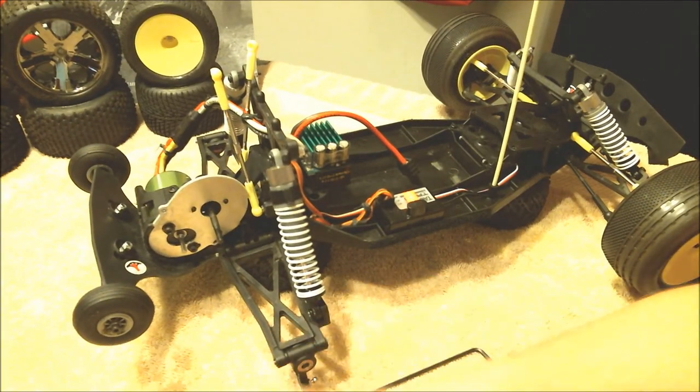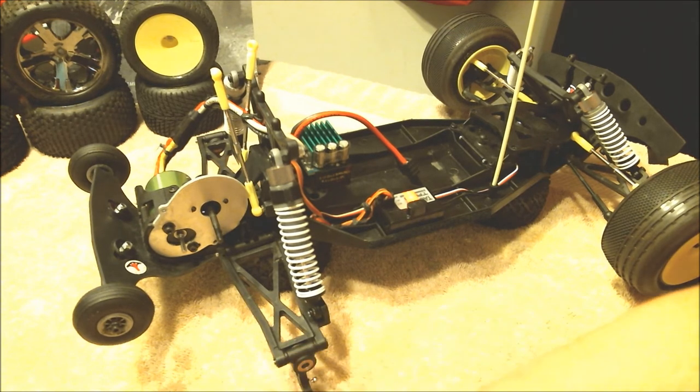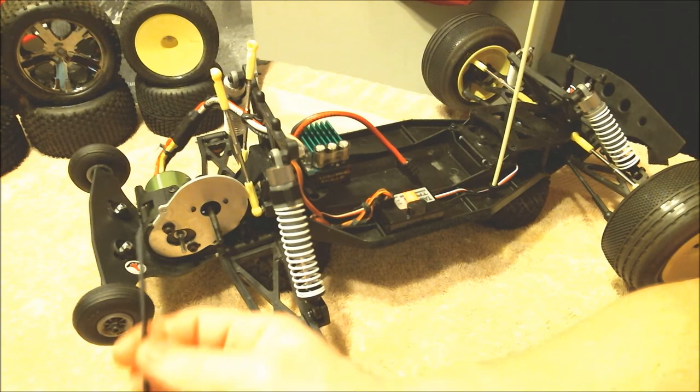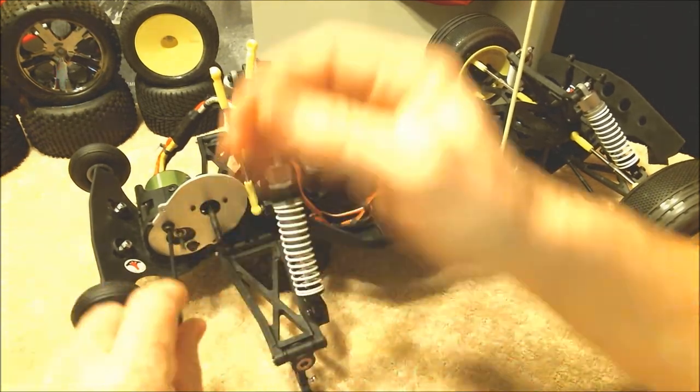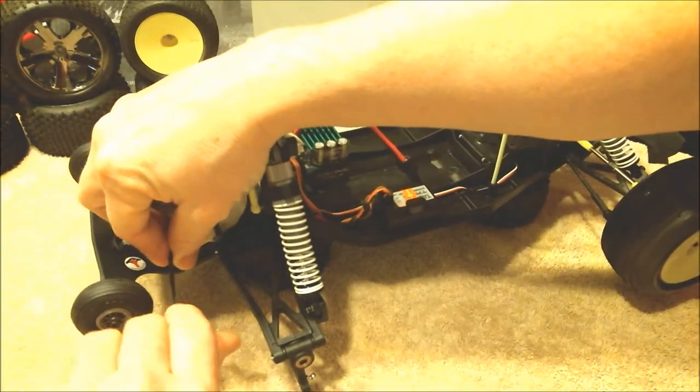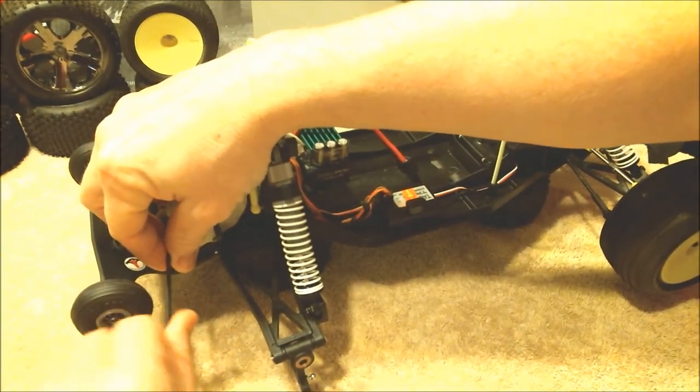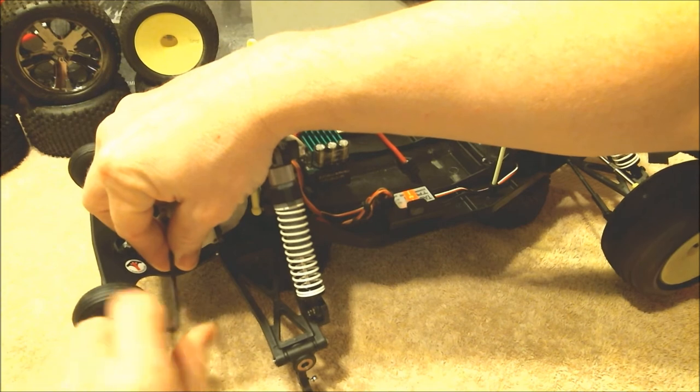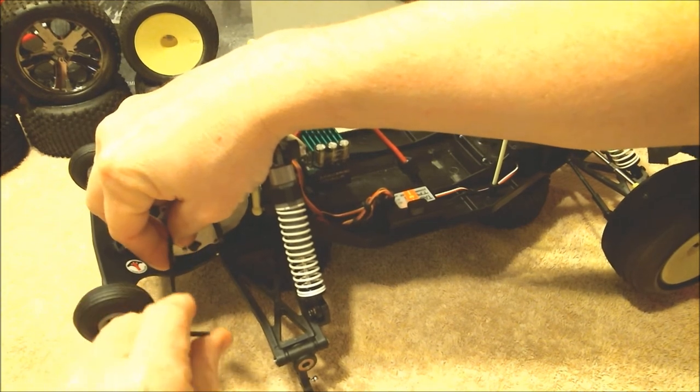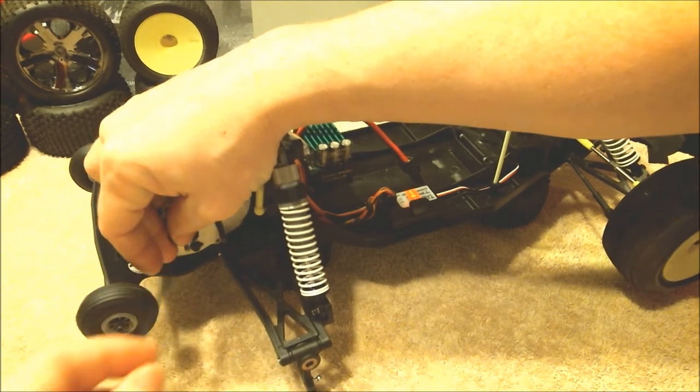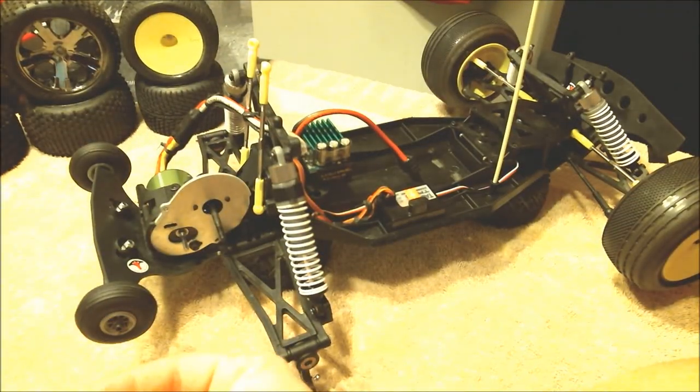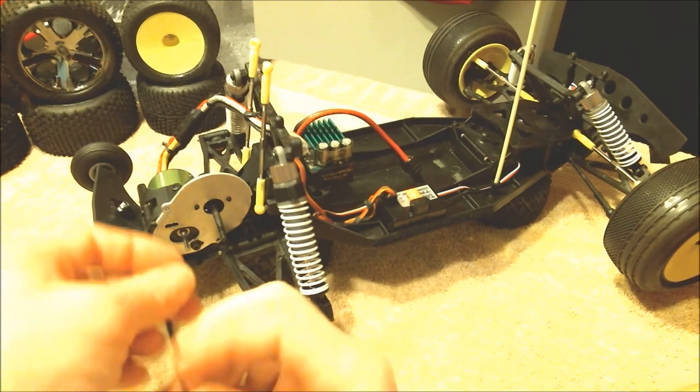The next step is going to be to take the motor off the motor plate so we can get to the transmission. It's a 2.5mm Allen wrench. I've already pre-loosened them just a little bit. I'm going to go ahead and back these the rest of the way out. And then there's going to be 6 Phillips head screws holding on the transmission onto the back of the truck. So go ahead and take the screws out, put them off to the side again.